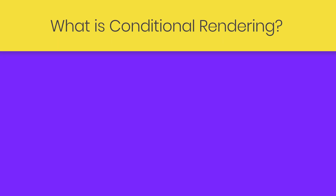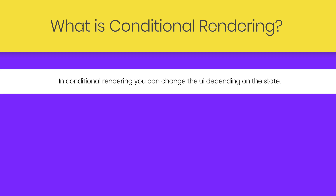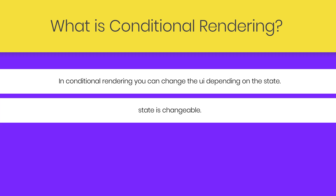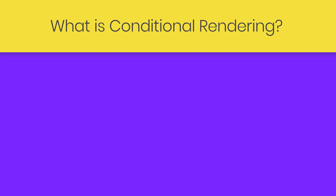In this lecture, we are going to understand how to work with conditional rendering. What is conditional rendering? In conditional rendering, you can change the UI depending on a state. As I said earlier, state is changeable. Using it, we're going to change the UI of the component. Let's take a look at a very simple example to understand how conditional rendering works in a React application.